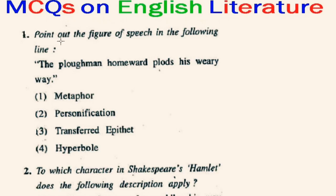Question number 1: Point out the figure of speech in the following line — 'The ploughman homeward plods his weary way.' The poetic device used in this line is transferred epithet. It is a figure of speech in which an epithet or qualifying adjective is transferred from a person to an object, or from one word to another.